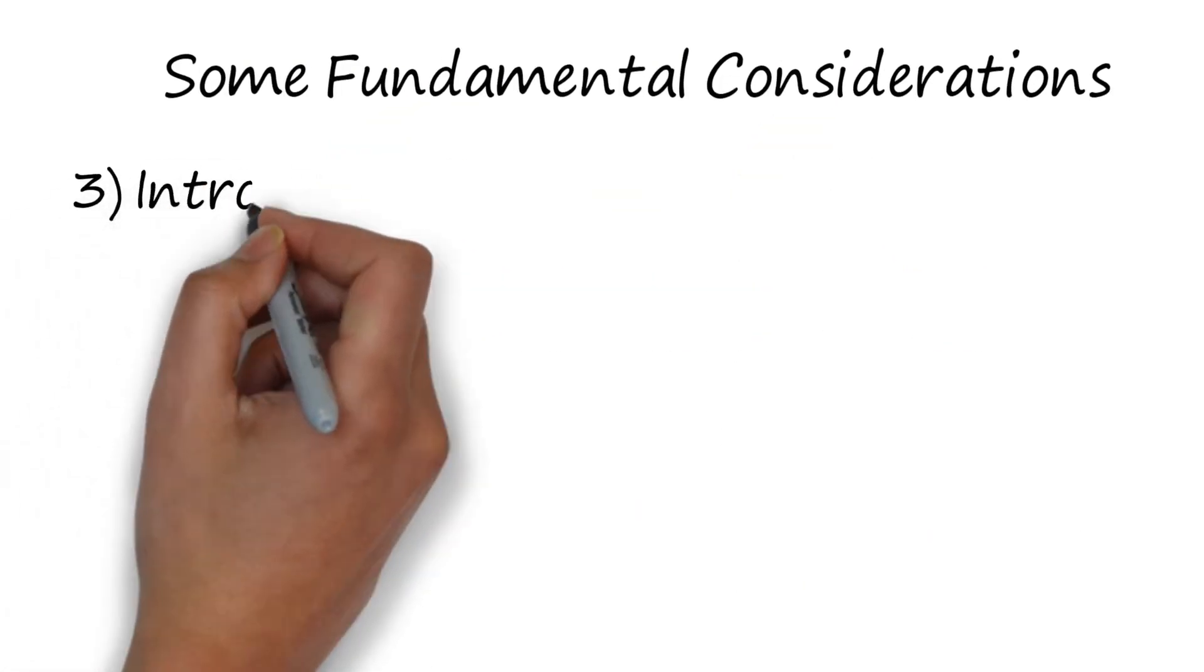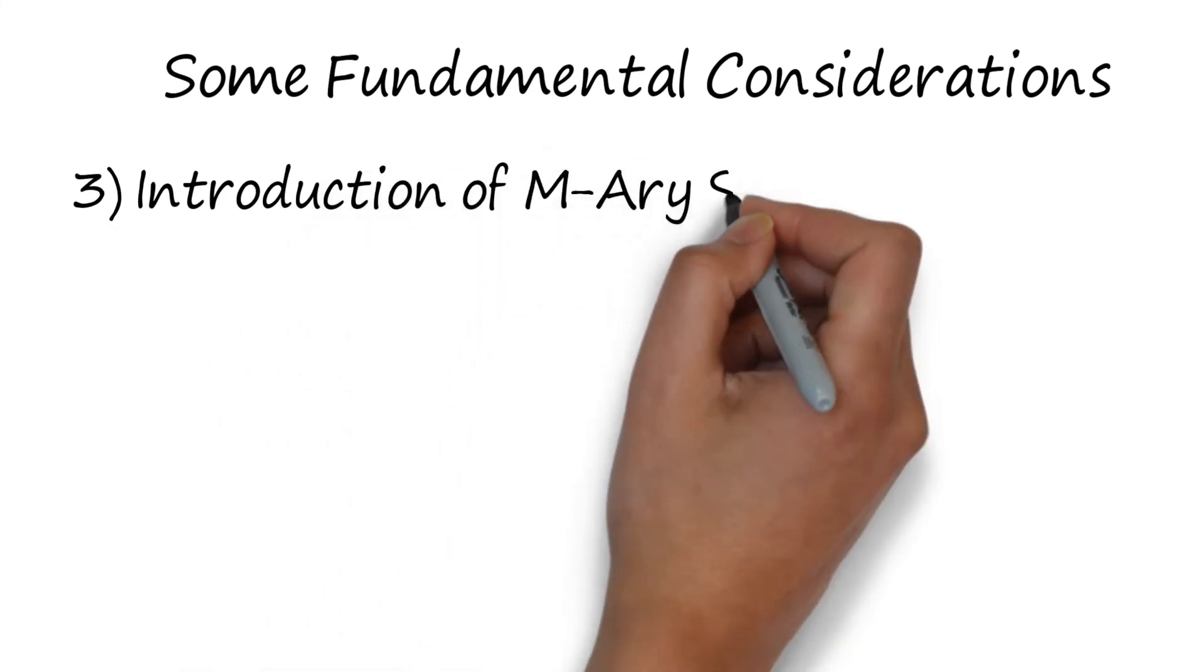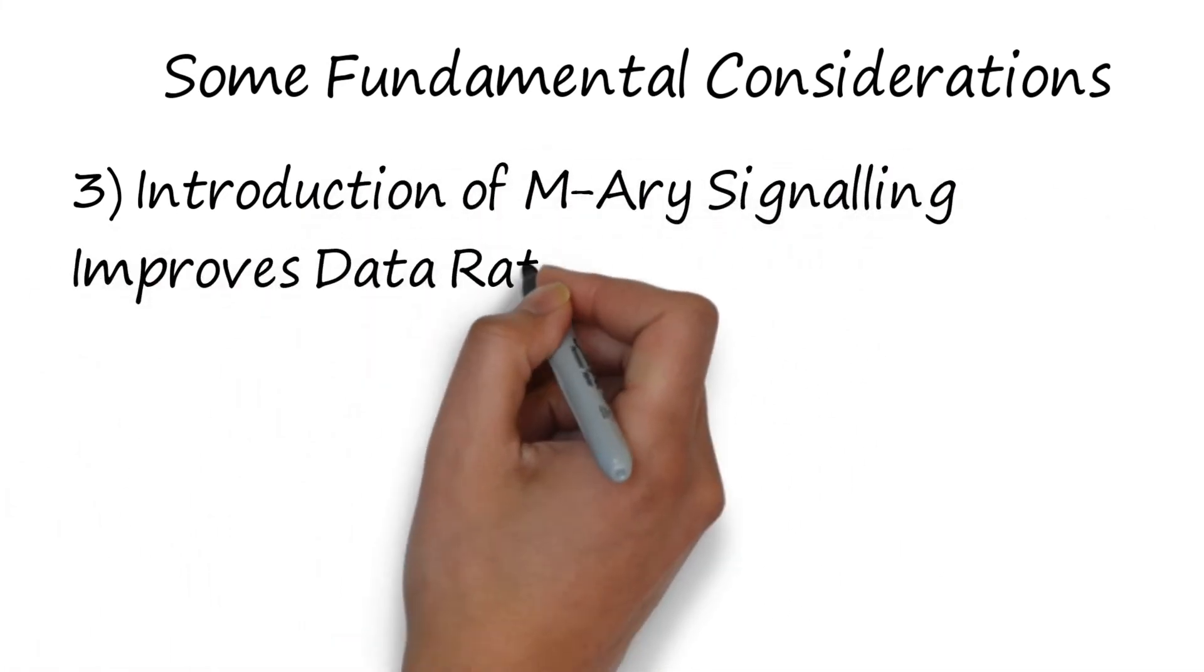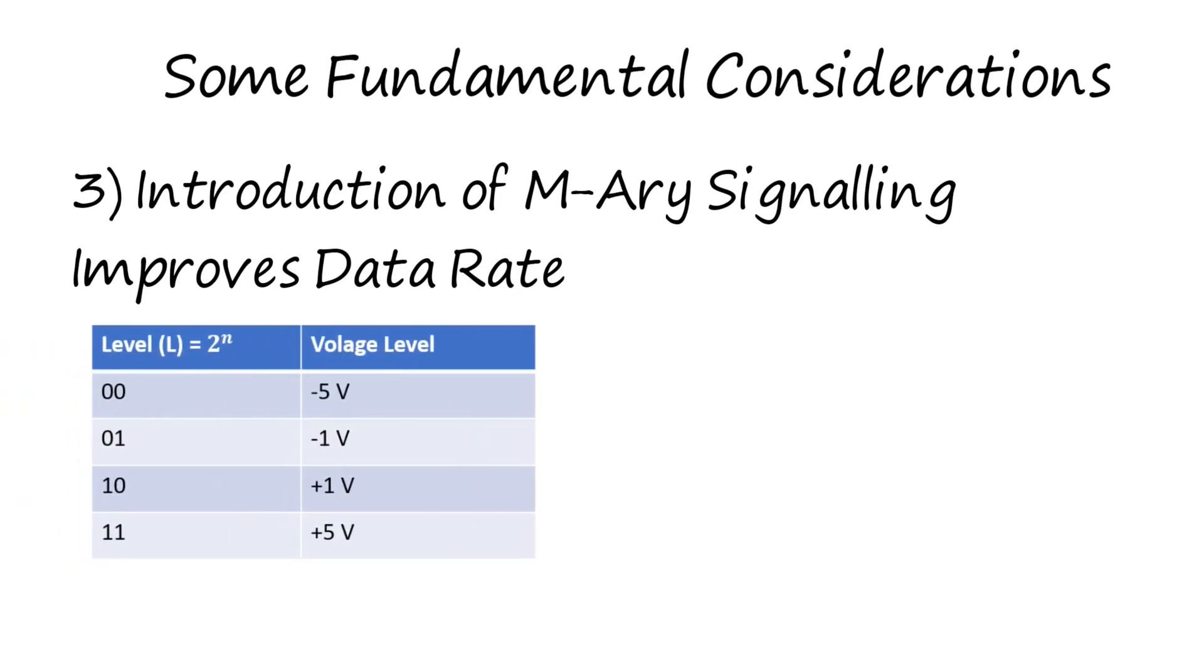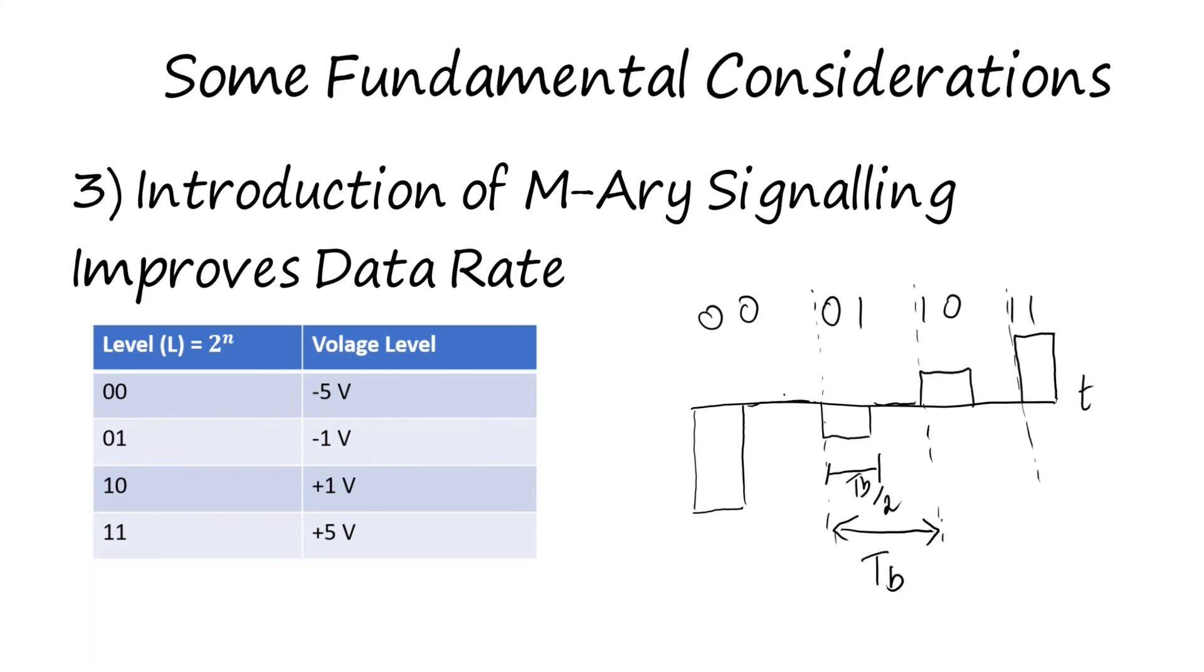For performance improvement, we can increase the data rate by assigning more voltage levels rather than just having +5 volt and -5 volt, and send more bits simultaneously. For example, we can send 00, 01, 10, and 11 in terms of 4 levels. We can assign 00 to -5 volt, 01 to -1 volt, 10 to +1 volt, and 11 to +5 volt respectively.